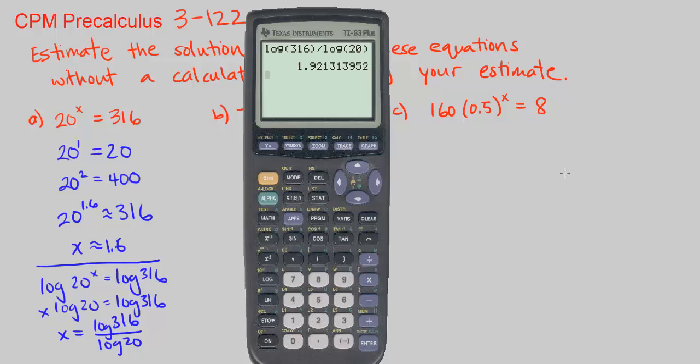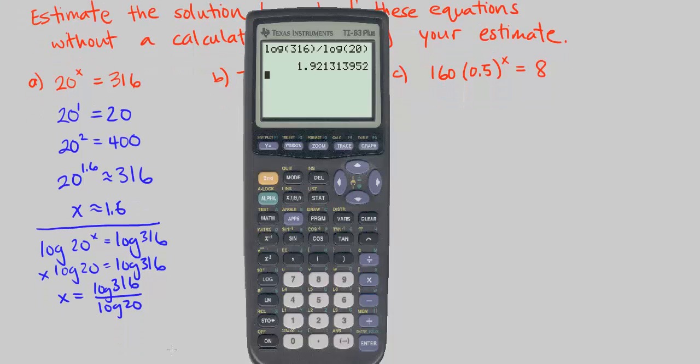Divided by log of 20. And we get x to be exactly, well it's still approximately we're going to round, but it's actually 1.9213. So this is our estimate and this is the actual value. And see how our estimate wasn't very accurate, but it was within the range. It's between 1 and 2. That's what's important.